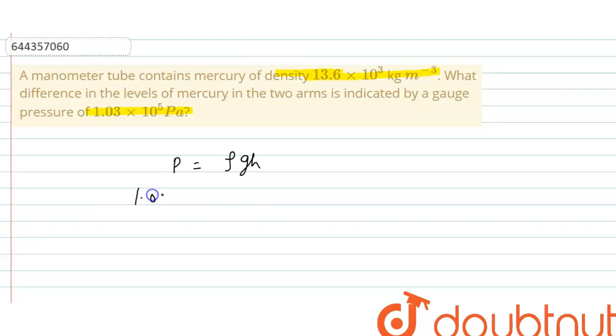So this equals 1.03 × 10^5 equals density of mercury, which is given as 13.6 × 10^3, times g which is 10. And this height is the difference in level of mercury in two arms. So from here we can calculate h.